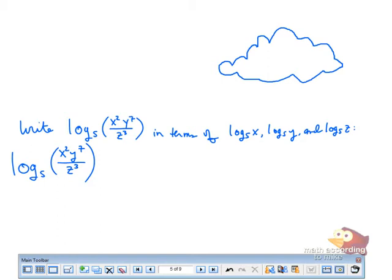We're going to first use the quotient rule. Since we have a log of a quotient, the quotient rule says you can rewrite it as the log of the numerator minus the log of the denominator.